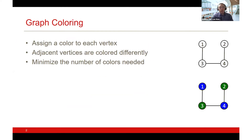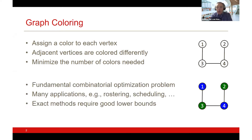The problem I will consider today is the vertex coloring problem, in which we are given a graph and the idea is to assign a color to each vertex so that adjacent vertices have different colors. The goal is to find the coloring that minimizes the total number of colors needed. This is perhaps one of the most important combinatorial optimization problems, with many practical applications in rostering and scheduling, and it also appears as a subproblem in many other applications.